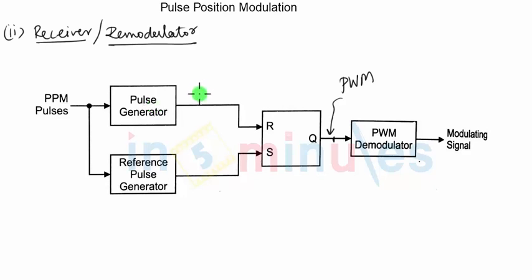So output of pulse generator will be nothing but PPM signal only, and we call it regenerated PPM signal because it is a signal from which all the noise will be removed, and along with that we need reference pulse generator.